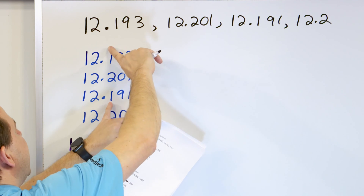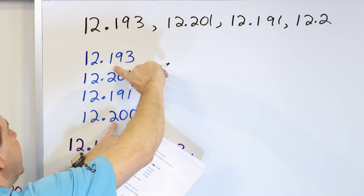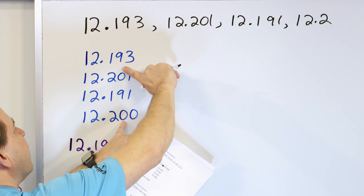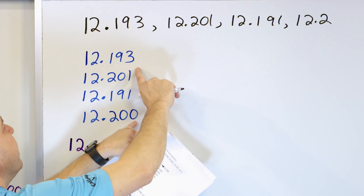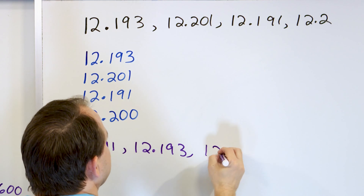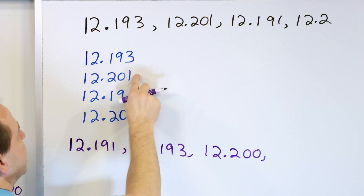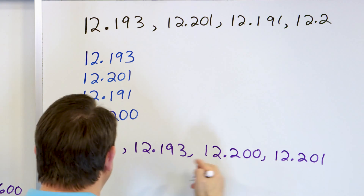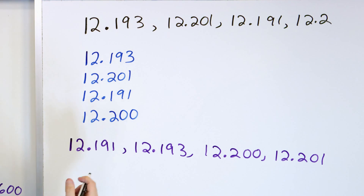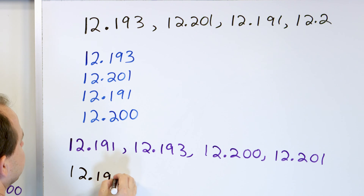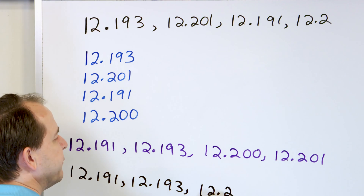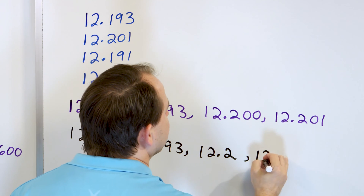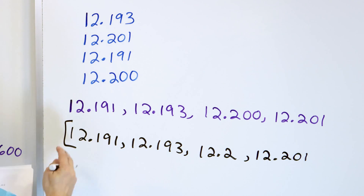That was the tiebreaker for the ones in the tenths. In the tenths place, we also have the twos. Those are tied, so we look for a tiebreaker in the hundredths and find zeros. We then look at the thousandths: zero compared to one. So 12.200 is the smaller of these two, and then finally the last one is 12.201. Going back to the original numbers: 12.191, 12.193, 12.2 — which we wrote as 200 — and 12.201. Least to greatest.